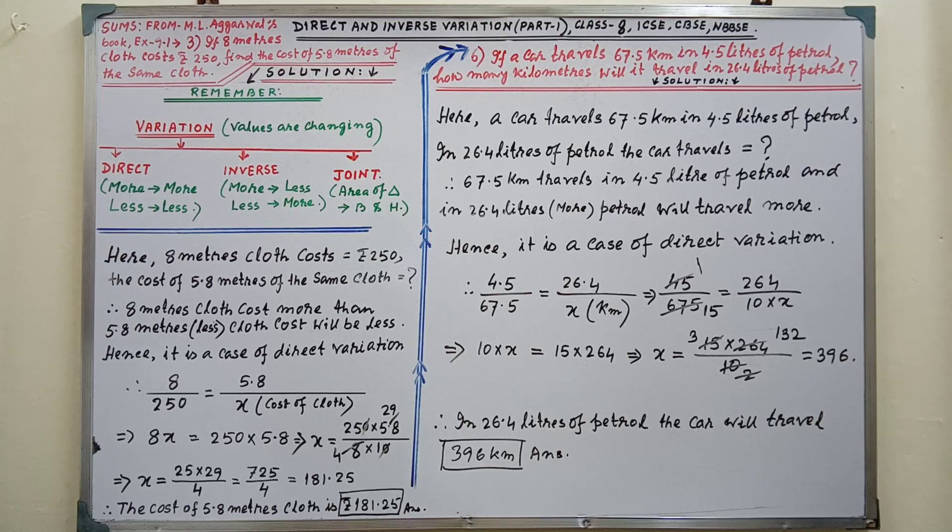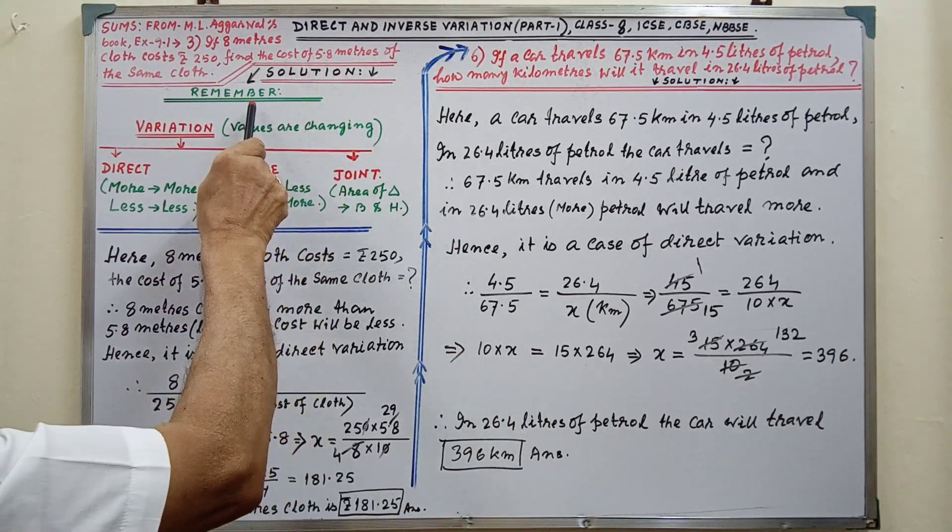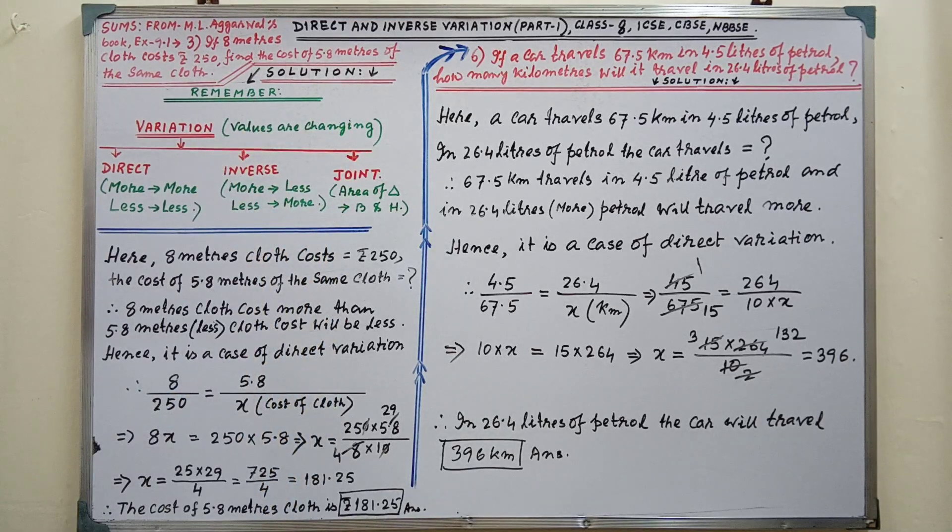Sum number 3. If 8 meters of cloth costs Rs. 250, find the cost of 5.8 meters of the same cloth. Before solution, we have to remember this.